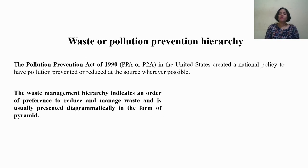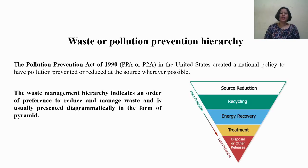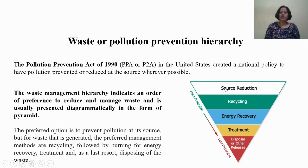Let us see the pollution prevention hierarchy. The Pollution Prevention Act of 1990, given by the United States, created a national policy to have pollution prevented at the source wherever possible. This law gave a hierarchy of management to control pollution, represented diagrammatically as a pyramid. The most preferred options are at the top: preventing pollution at its source. If waste is generated, the preferred method is recycling, followed by burning for energy recovery, then treatment, and the last method is disposal.